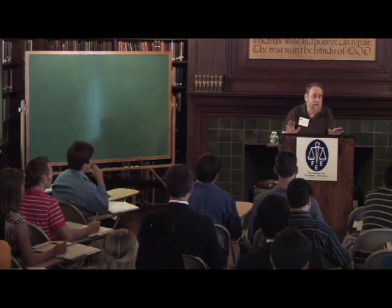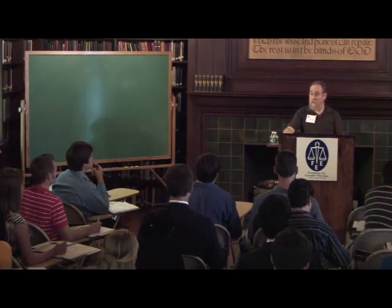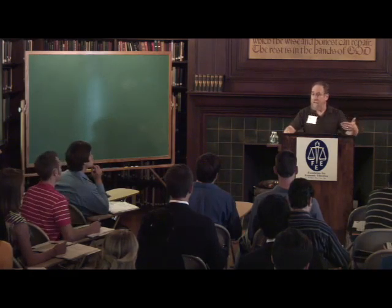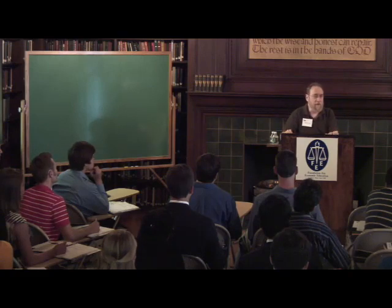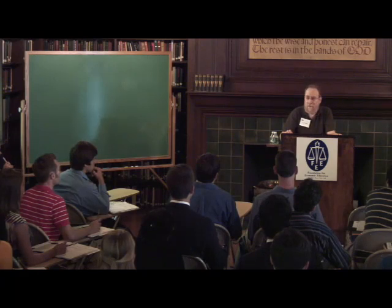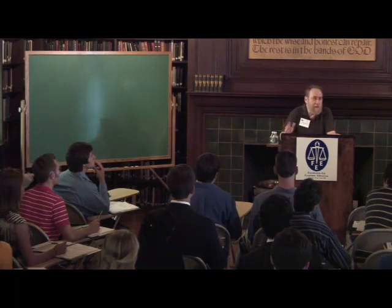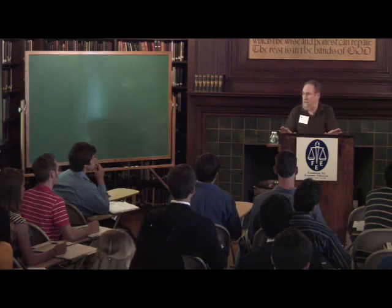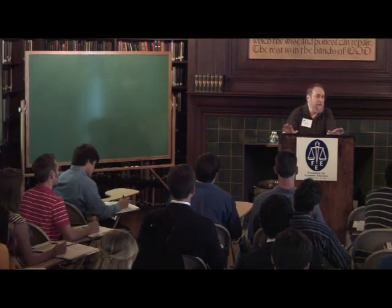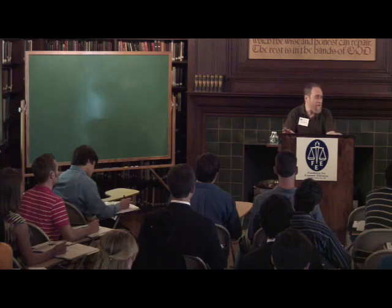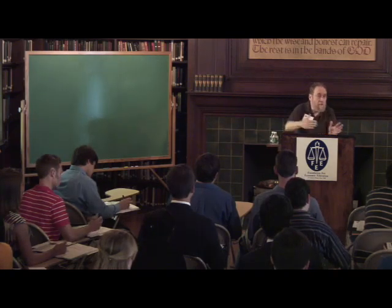The Austrian School has nothing to do with the economy of Austria. It just means that the thinkers who developed this approach to economics were in the late 19th century and into the early 20th century Austrians — they were at the University of Vienna. If you know anything about Vienna in that era, it was an amazing place and time. There were advances being made in all major areas: philosophy, science, the arts. Economics was one of those areas, putting economics on a new path.